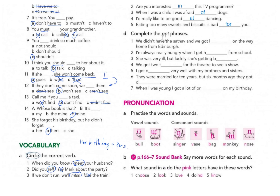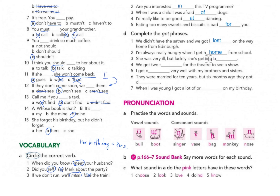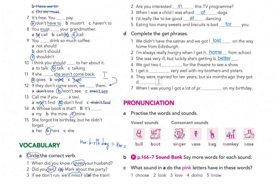Exercise D: complete the 'get' phrases. Number one: 'We didn't have a map so we got lost.' Number two: 'I'm always really hungry when I get home.' Number three: 'She was very ill but luckily she is getting better.' Number four: 'We got to the theater to see a show' — you need a ticket.